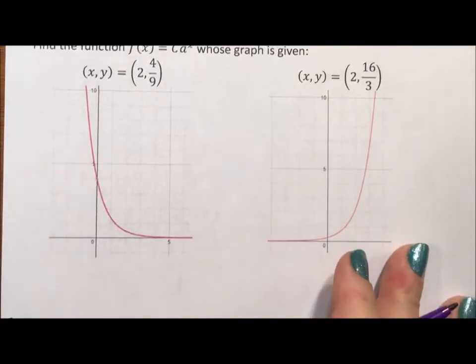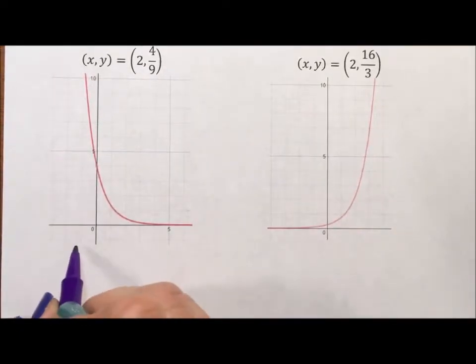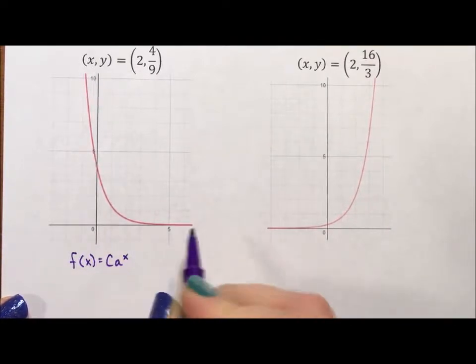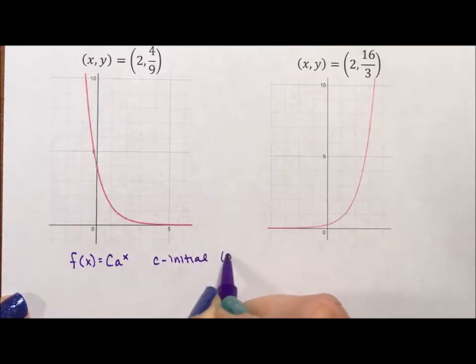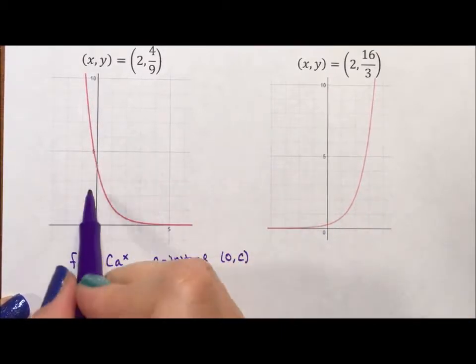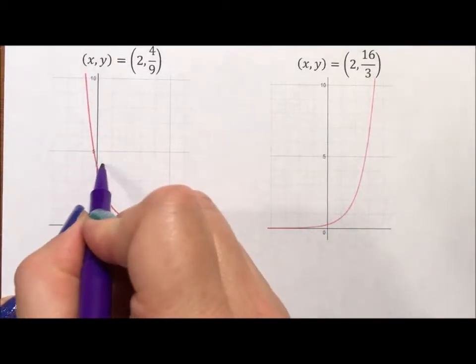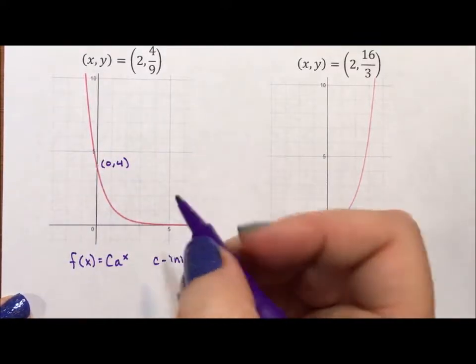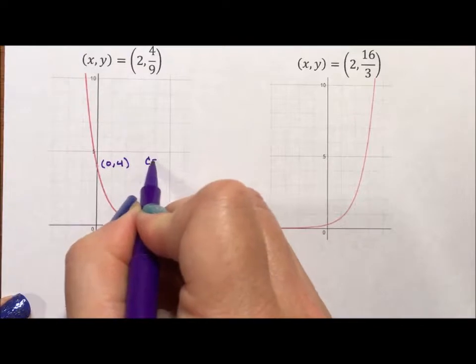Well, f(x) = ca^x. c is the initial value. In other words, (0,c) is a point on the graph. So for this one, this is 4. So I know that c has to be 4 on this graph.